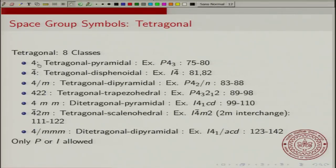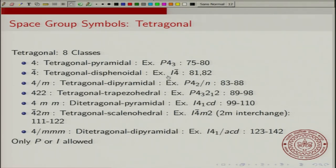For the tetragonal system with crystal class 4, you can have a total of 6 space groups ranging from numbers 75 to 80. One example is P4₃, which is primitive and the fourfold axis is actually a 4₃ screw axis. For the 4̄ class, there are only two different space groups, 81 and 82. One example is I4̄.